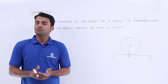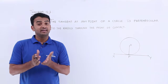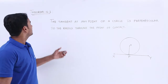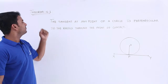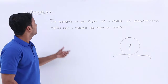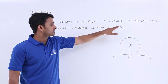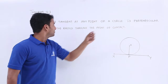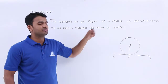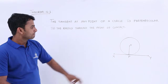Hello guys, welcome to TutorialsPoint. In this video we are going to discuss Theorem 10.1. It says that the tangent at any point of a circle is perpendicular to the radius through the point of contact.